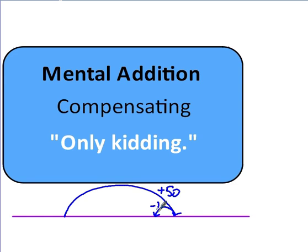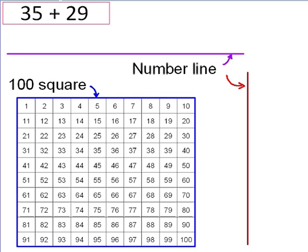This works particularly well when you're adding numbers that are close to a multiple of 10. So, for example, 29, or 39, or 59, or even numbers ending in 1 because they're still close to multiples of 10. So, numbers like 41, or 11, or 21, or 31. It's a useful technique for adding numbers such as those.